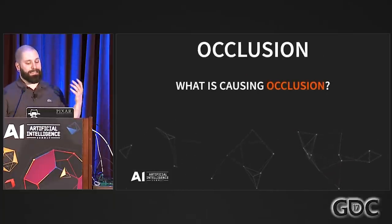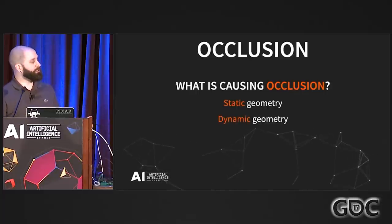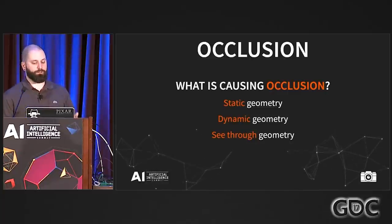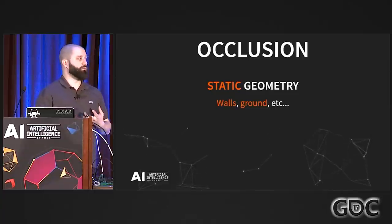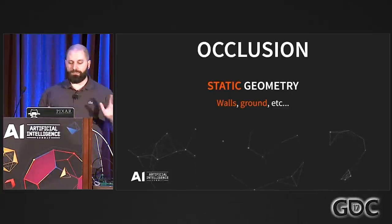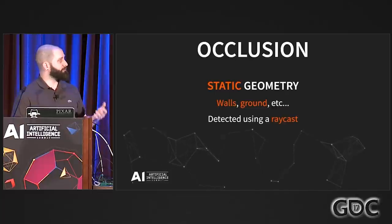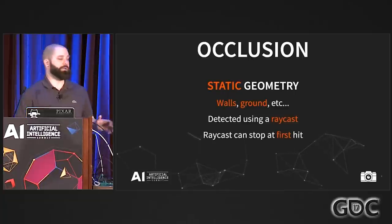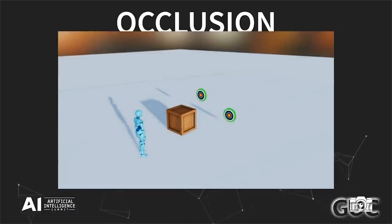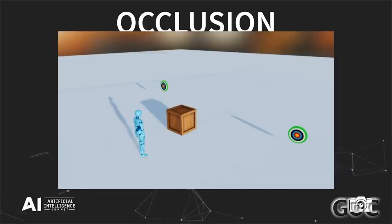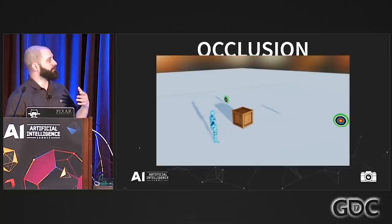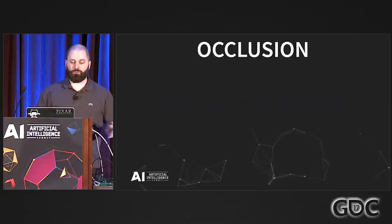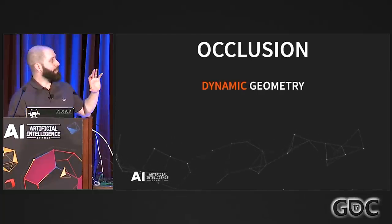For occlusion: in most games it's caused by static geometry, dynamic geometry, and see-through geometry. Static geometry — walls, roofs, ground, rocks, trees — is detected using a raycast, and as soon as the raycast hits one, you can stop; you know you won't see through it. Invest in some debug display; even just lines are useful for QA to identify why an NPC's behavior is changing based on occlusion. Dynamic geometry depends on context — characters, animals, moving objects. In Assassin's Creed Syndicate, carriages blocked line of sight, but sometimes the rigid body of a dynamic object is too crude and blocks too much, so you need to fall back on the ballistic mesh, which is more expensive but more detailed.